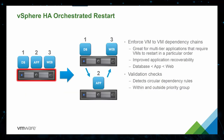We've also included an orchestrated restart order for HA, which will be beneficial for VM-to-VM dependency chains. A good example of this would be a three-tier web application that requires a certain start order. The database server needs to come up first, then once the database is up, the application server comes up, and once the application is up, the web server comes up. With this orchestrated restart order for HA, there is also a validation check to detect circular dependency roles within and outside priority groups.